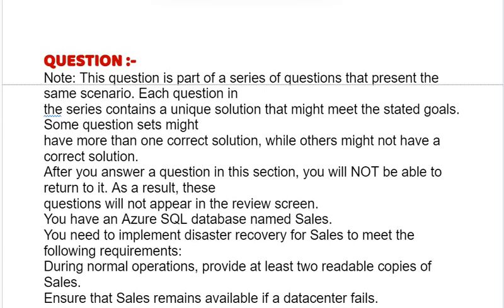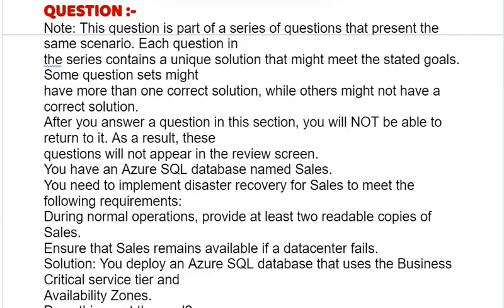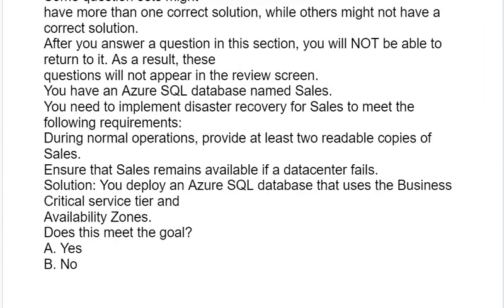You have an Azure SQL database named CELS. You need to implement disaster recovery for CELS to meet the following requirements: during normal operations, provide at least two readable copies of CELS, and ensure that CELS remains available if a data center fails. Solution: you deploy an Azure SQL database that uses the Business Critical service tier and availability zones. Does this meet the goal?